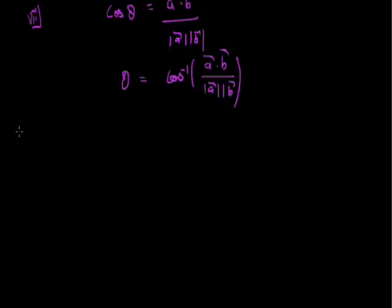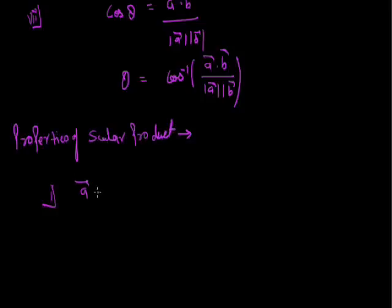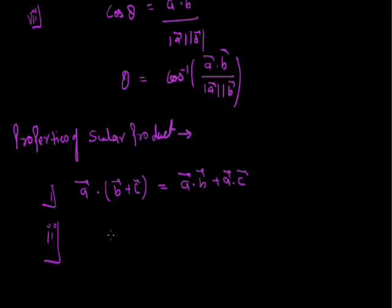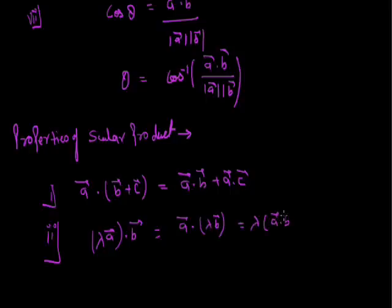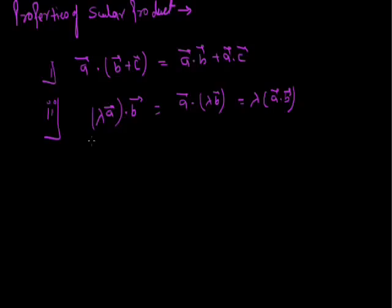Some properties of the scalar product: first, the distributive property — a·(b + c) = a·b + a·c. Second, if λ is any scalar, then (λa)·b = a·(λb) = λ(a·b).